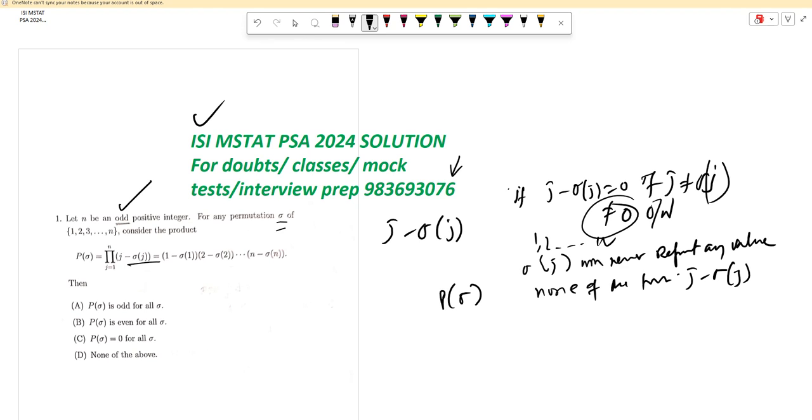However, because sigma is a permutation of 1 to n, also n is odd. And in this part, n is odd, there must be at least one value of j for which j equals sigma j.